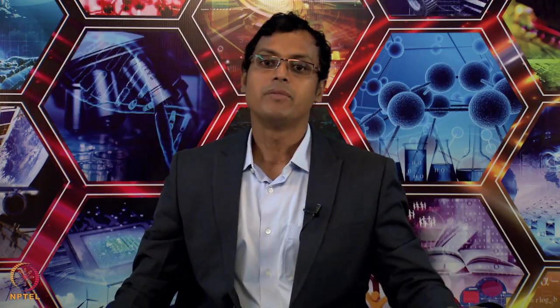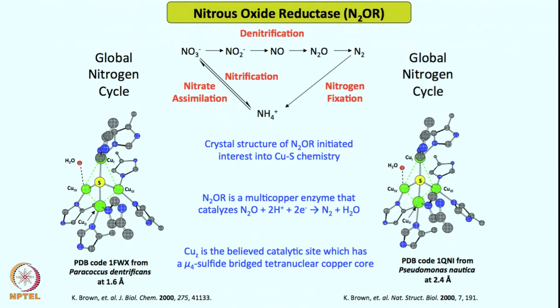Nitrous oxide, as you may know, is a greenhouse gas, also known as laughing gas. It has many detrimental effects on our nature, but it is also one of those gases involved in the nitrogen cycle. The denitrification process involves nitrite to NO to N2O and finally nitrogen formation. From nitrate this whole process starts, and there is of course nitrate assimilation and nitrogen fixation. Overall the global nitrogen cycle is linked with nitrous oxide.